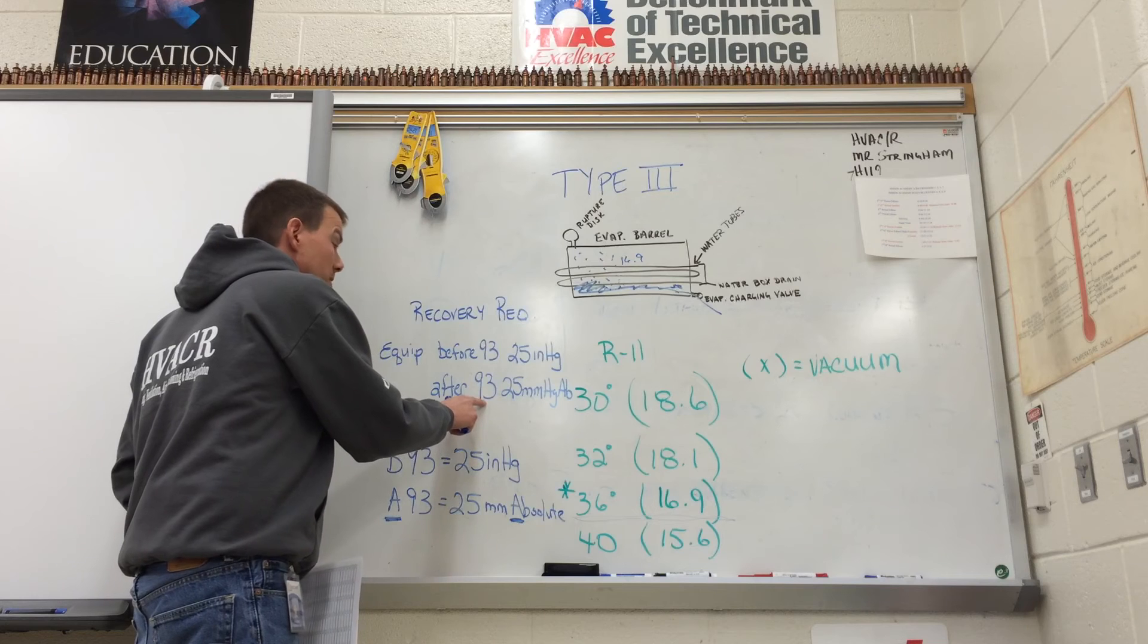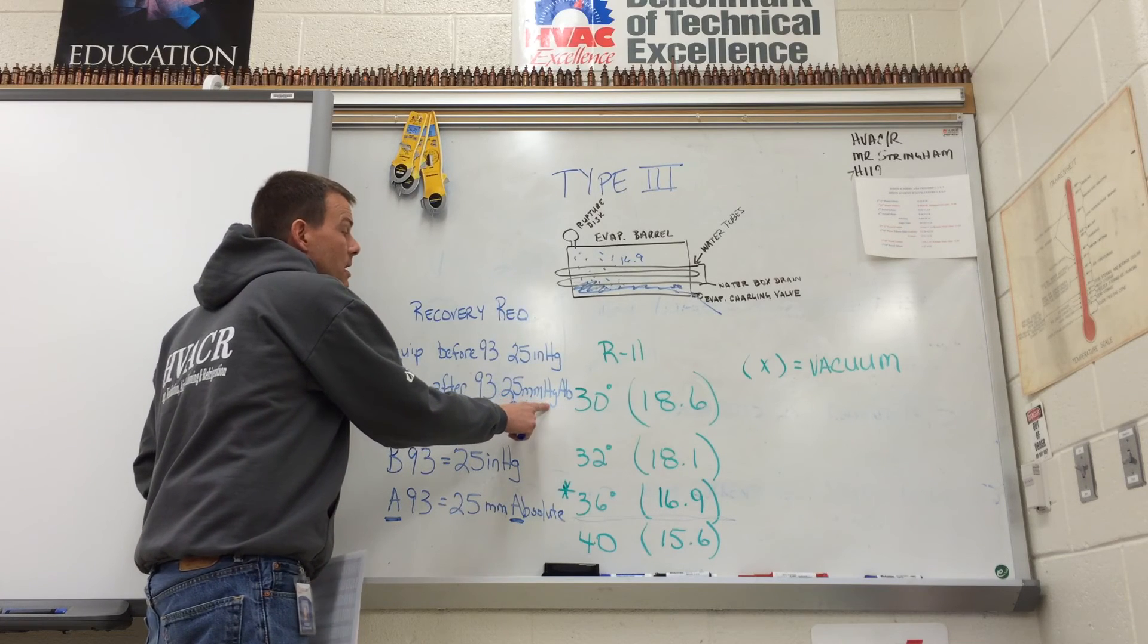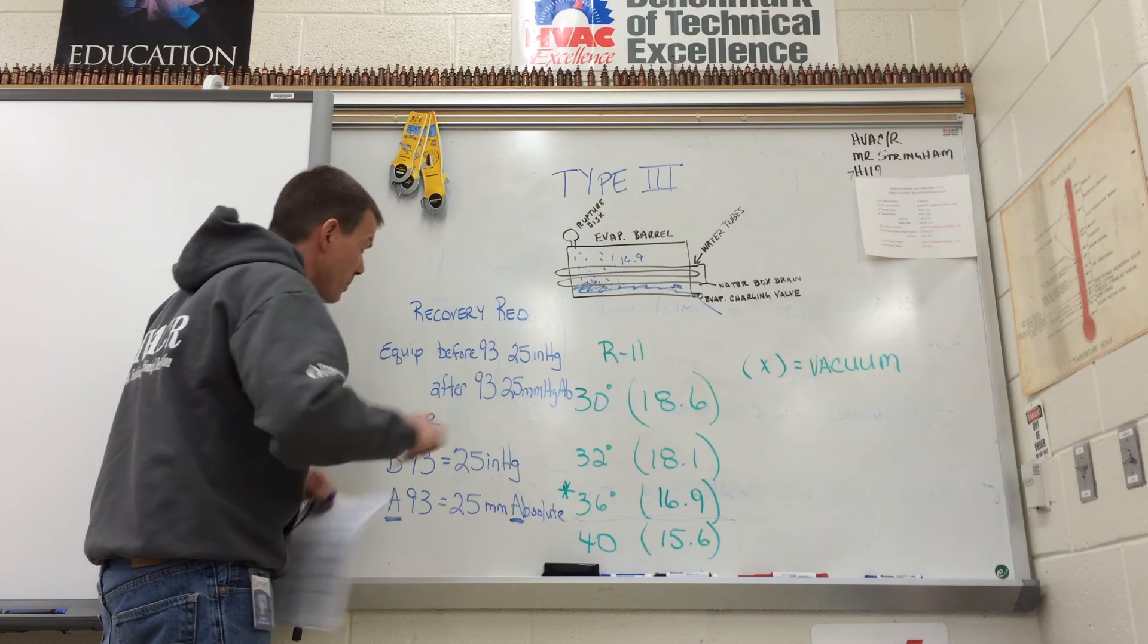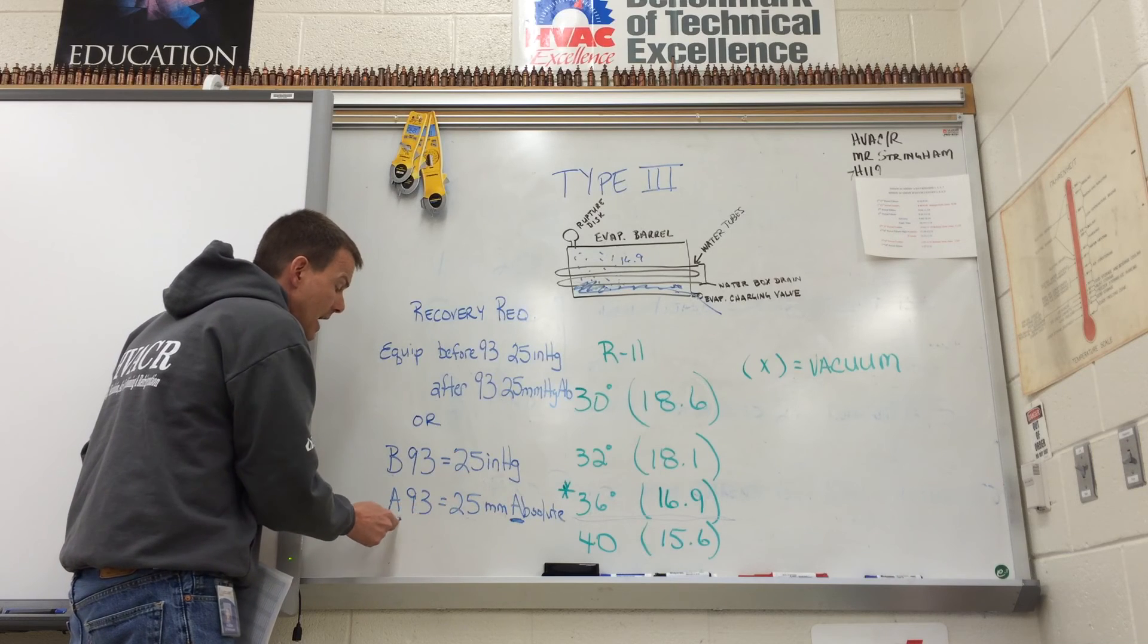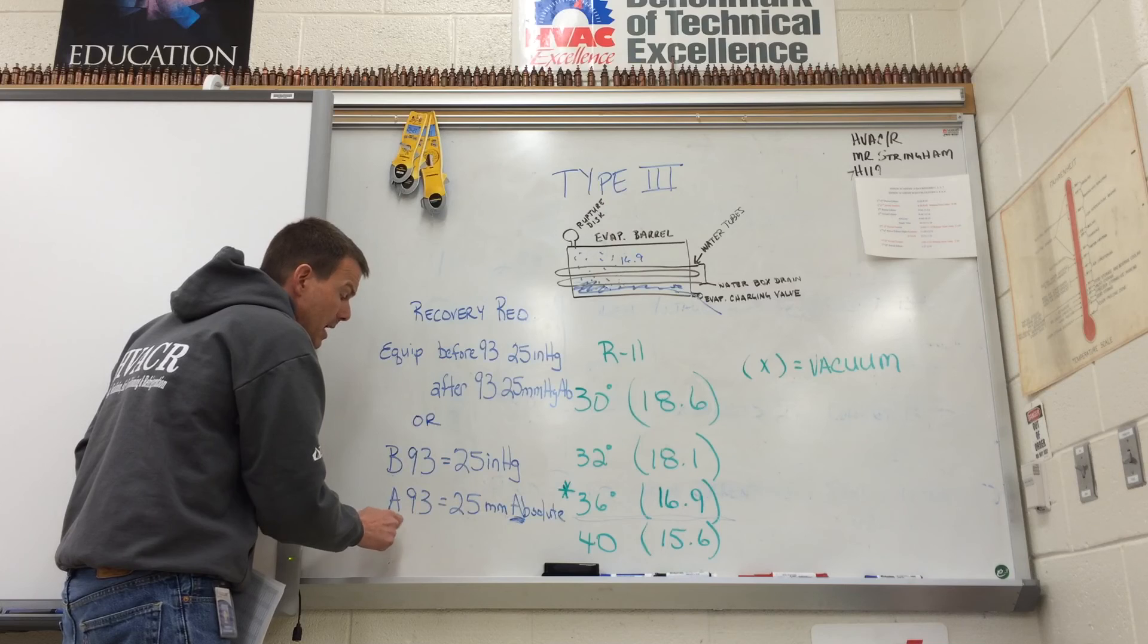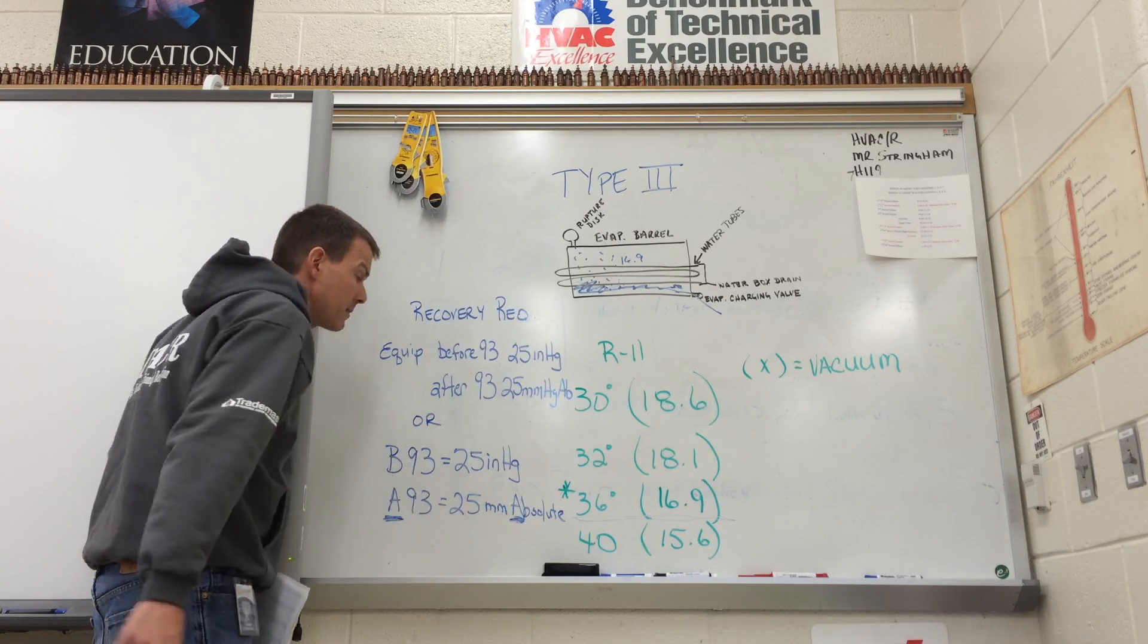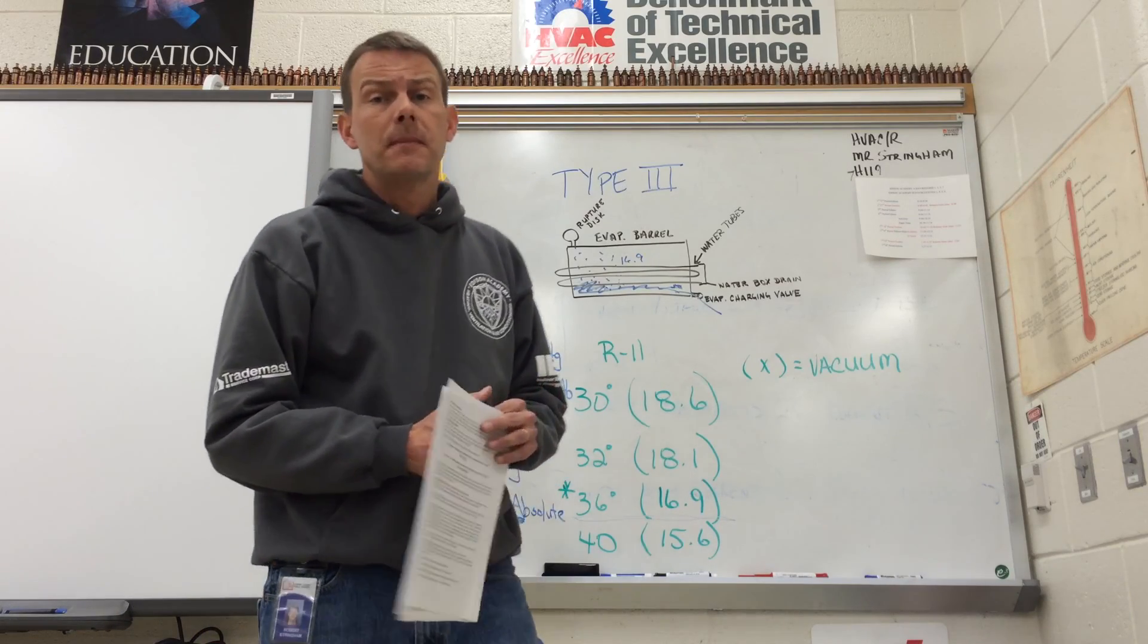And then if it's after 1993, which is mostly the equipment today, you're going to be getting down to 25 millimeters mercury absolute. So the way I have them to remember that is before 93, 25 inches in mercury. And then after is absolute. A starts with F. Absolute starts with A. And then after also start A and A. So we just do the two A's, absolute and after. So hopefully this wraps up a little bit of the type 3 and this helps you. Thank you.